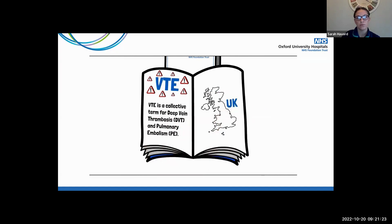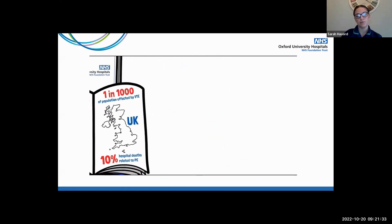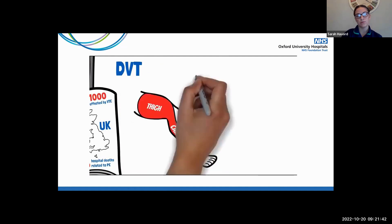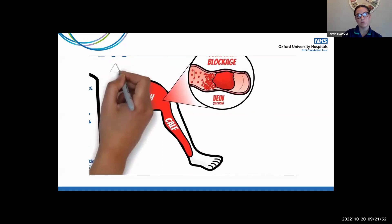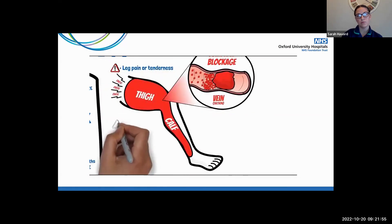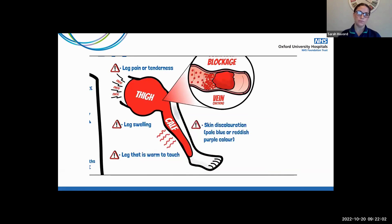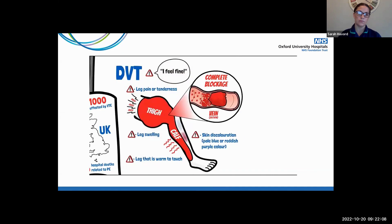VTE is a serious healthcare problem affecting approximately 1 in every 1,000 of the UK population. Over 10% of hospital deaths are related to PE. A DVT occurs when a blood clot forms in a vein. They tend to occur in the deep veins of the leg, usually in the calf or thigh, and a DVT can block the flow of blood partially or completely. The signs and symptoms of a DVT are leg pain or tenderness, leg swelling, a leg that is warm to touch, skin discolouration which can be pale blue or reddish-purple. Alternatively, people can be asymptomatic with a DVT and show no symptoms at all.